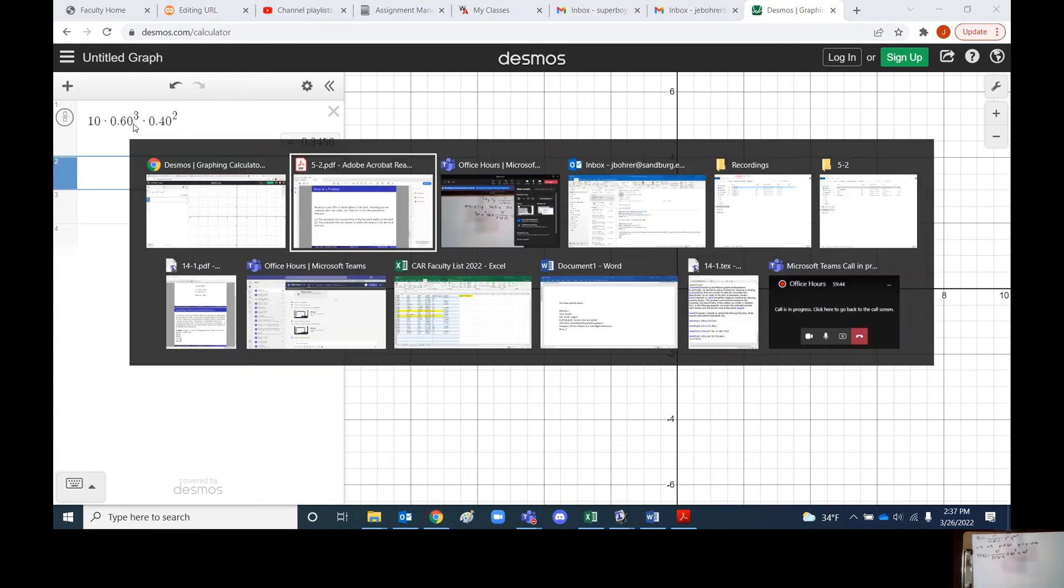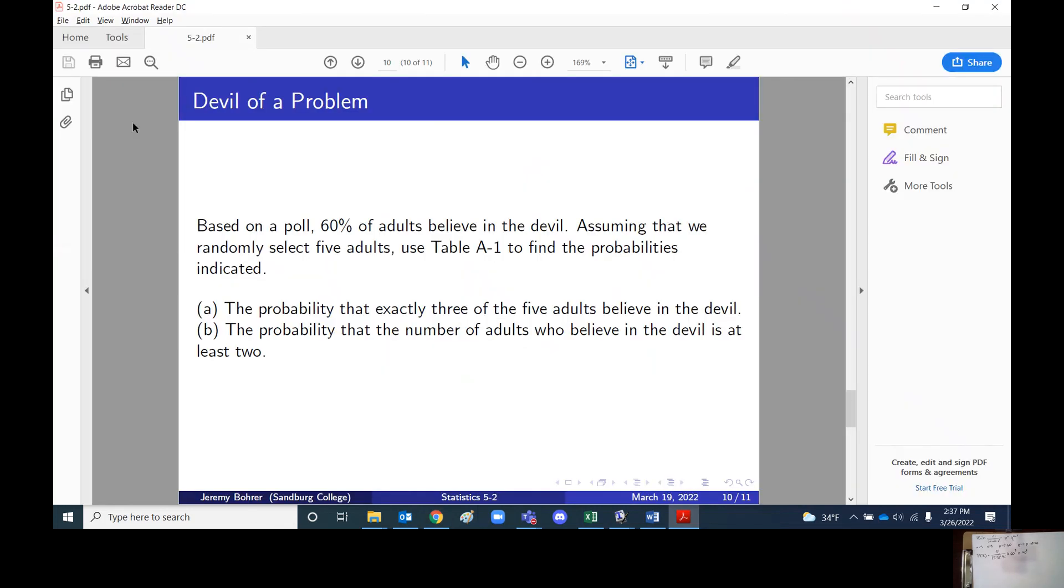The other question we were given here is what is the probability that the number of adults who believe in the devil is at least 2. The problem with this is that this means we need to find the total probability for 2, 3, 4 and 5.